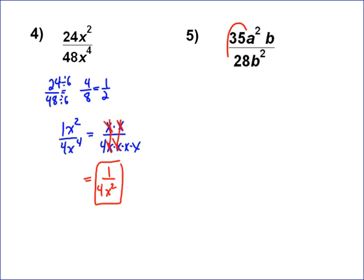Okay, the second problem, again, deal with the 35 over 28 first. It's very obvious to me that what goes into both those, right? A 7 goes into 35, and a 7 goes into 28. And so you're left with 7 goes into 35 five times, so you have 5a squared b over 4b squared.